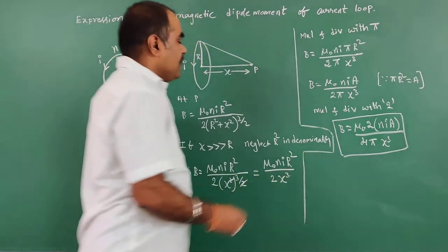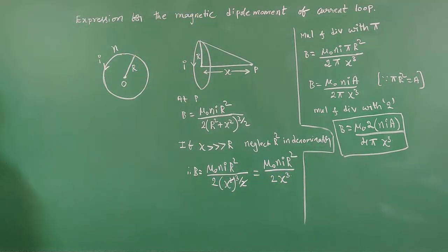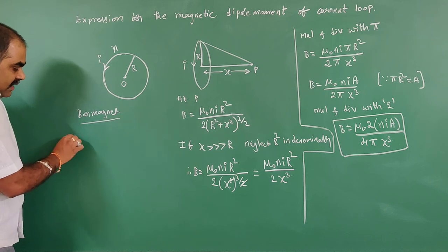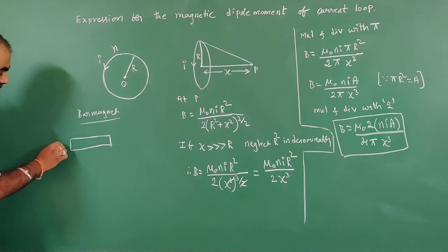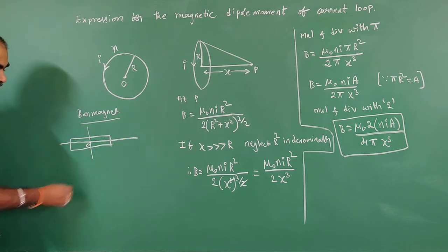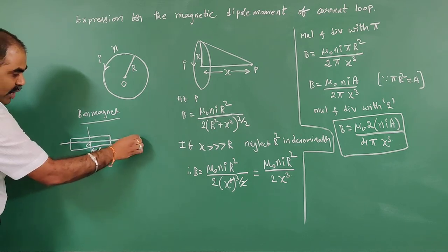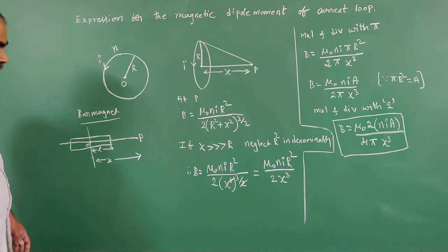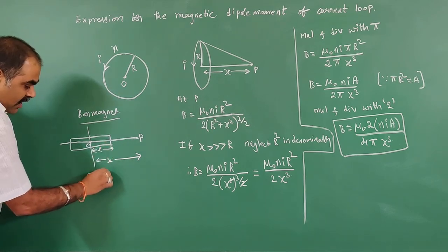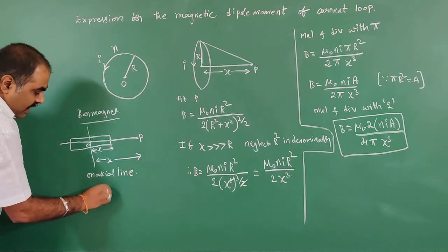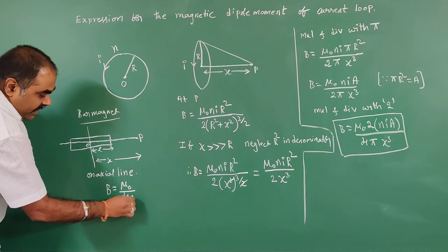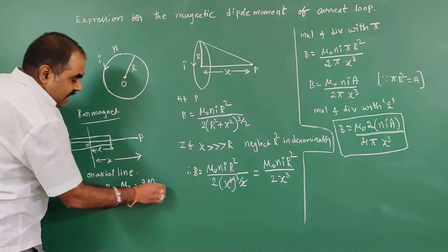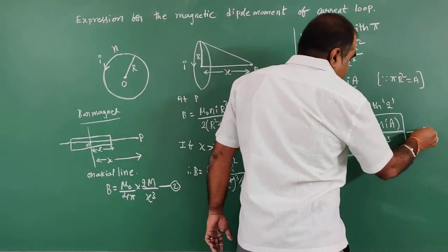Previously in the magnetism chapter, for a bar magnet on the axial line, the fundamental formula is B equals (μ₀/4π) × 2M divided by X³, where X is the distance from center to point P. This is our second equation, and the current loop formula is our first equation.